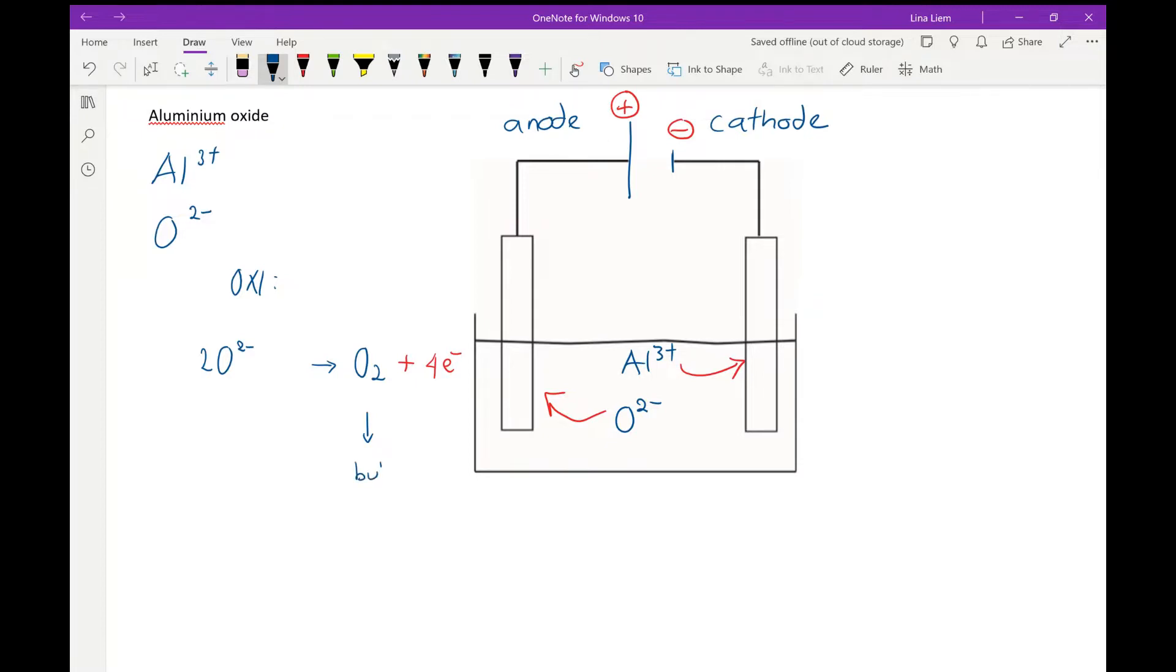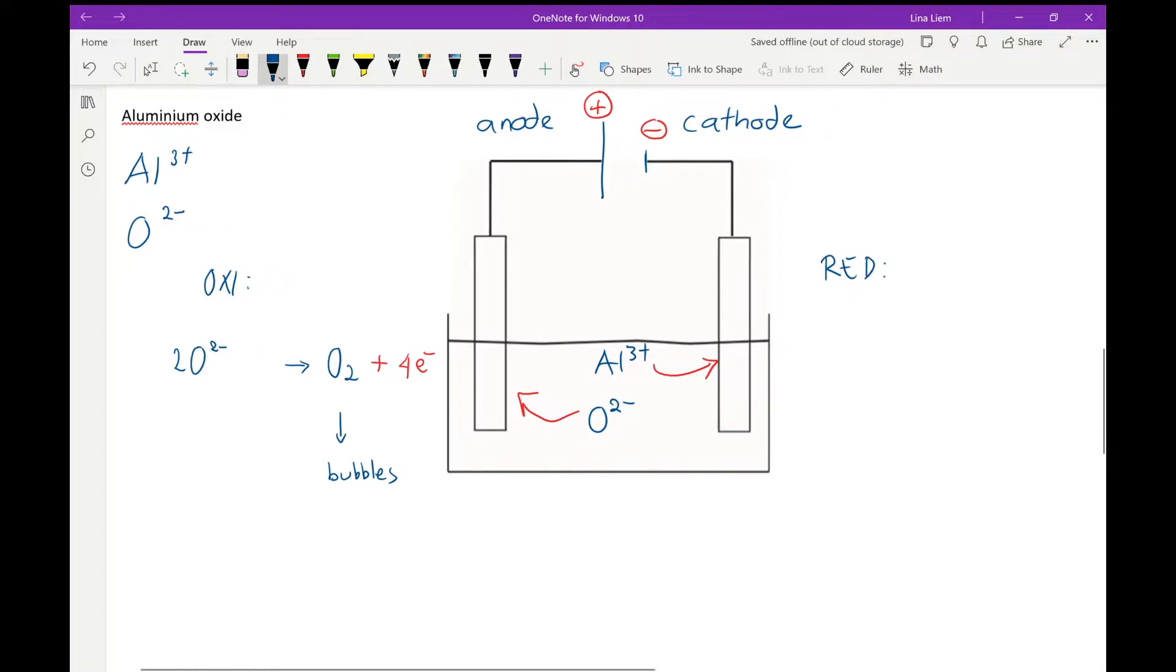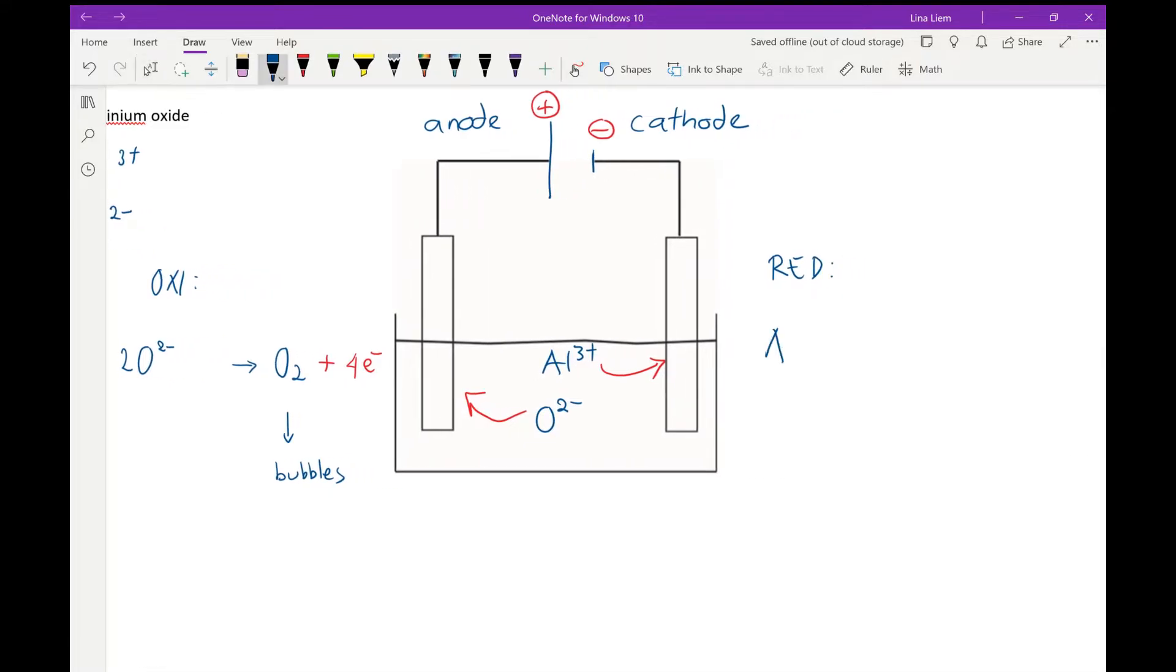On the other side, reduction is happening. Aluminum ion is reduced to aluminum metal, and three electrons are added on the left hand side to balance the charge. Aluminum is a silver colored metal.